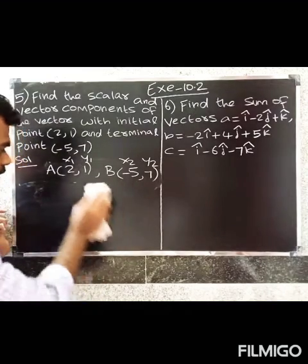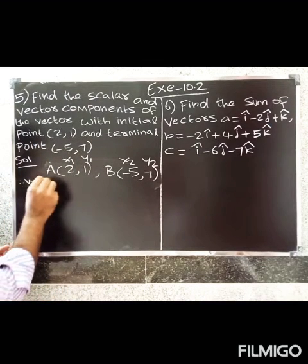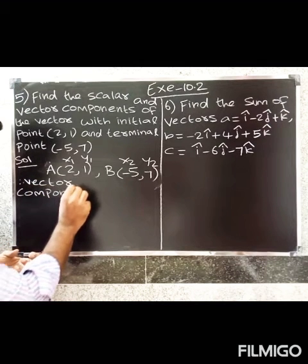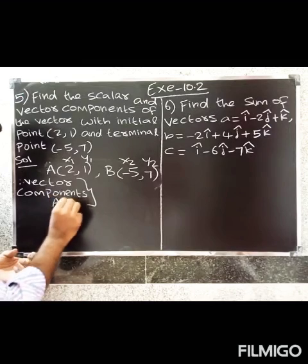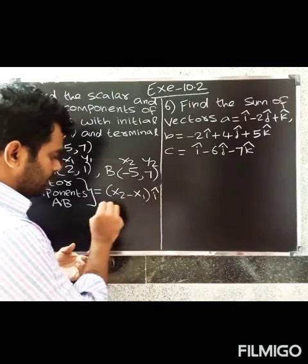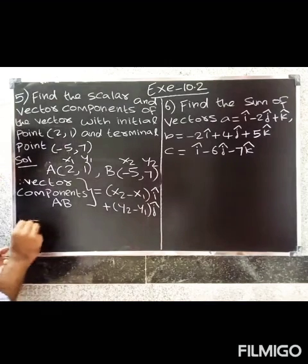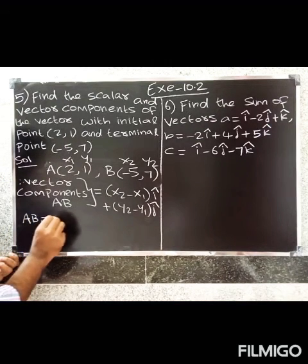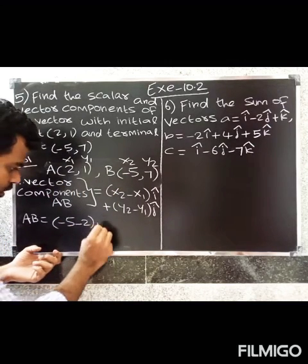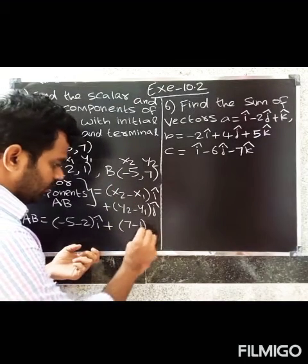Using the formula: AB equals (x2 minus x1) î-cap plus (y2 minus y1) ĵ-cap. So AB equals (-5 minus 2) î-cap plus (7 minus 1) ĵ-cap.